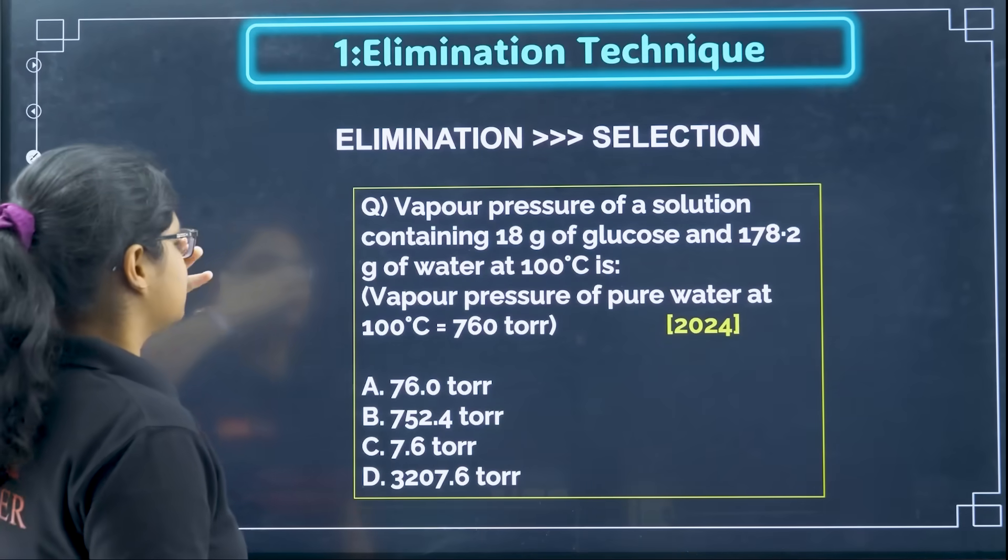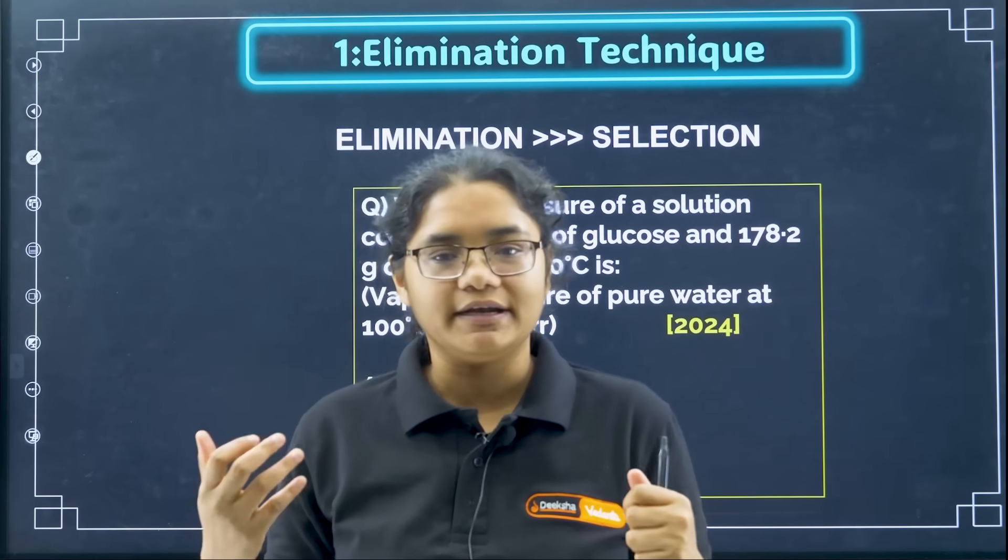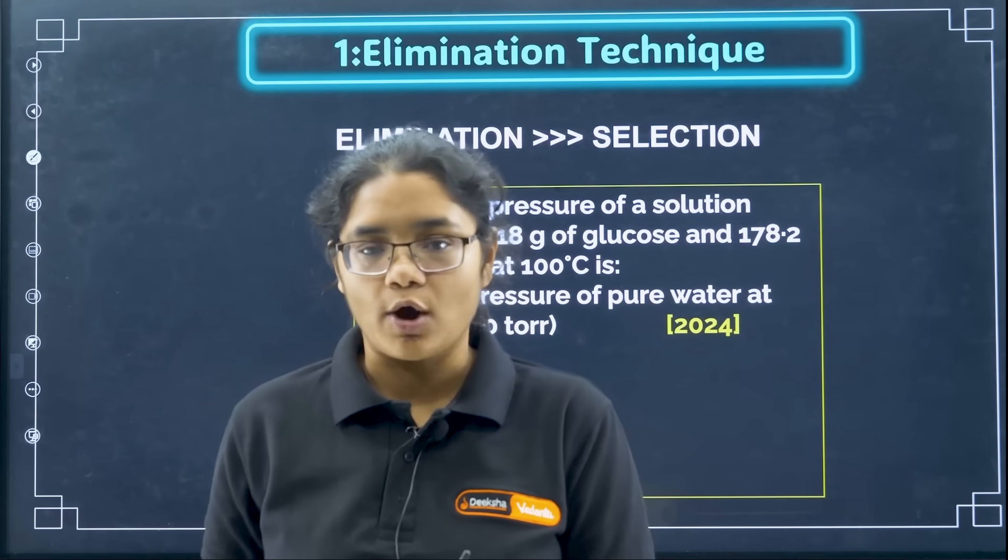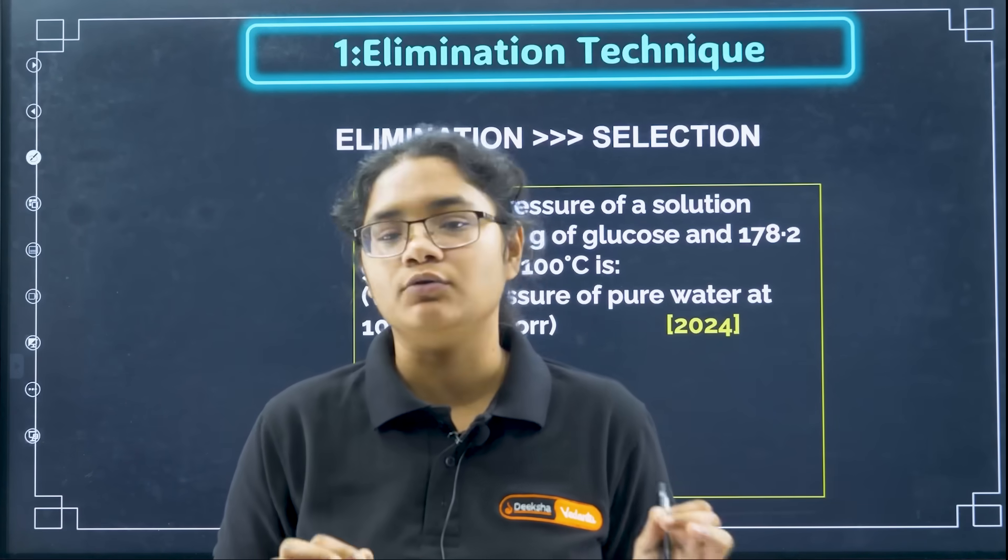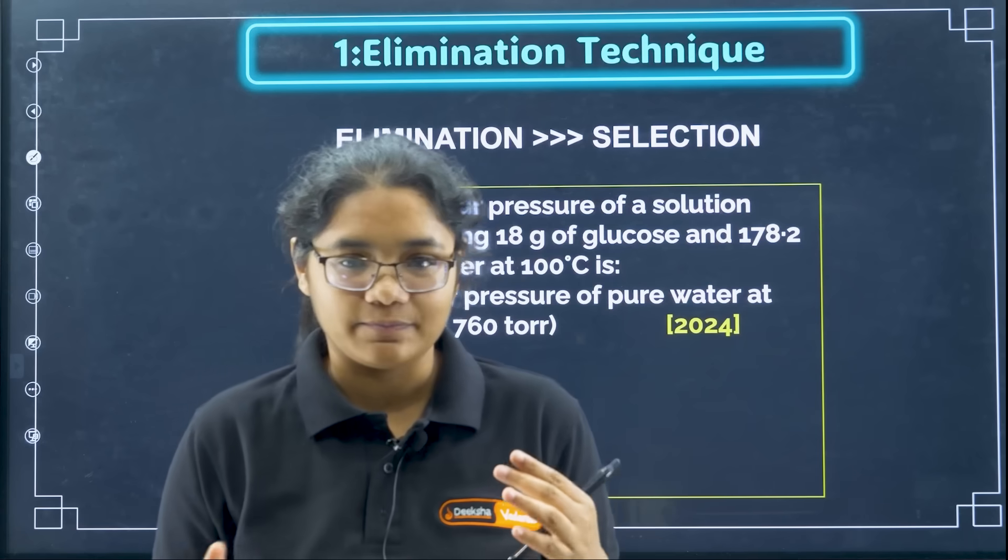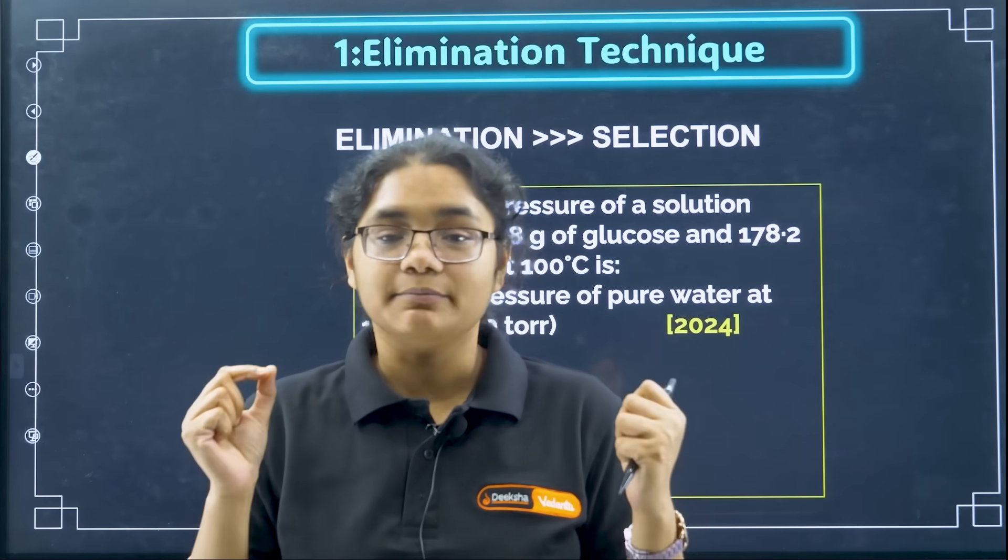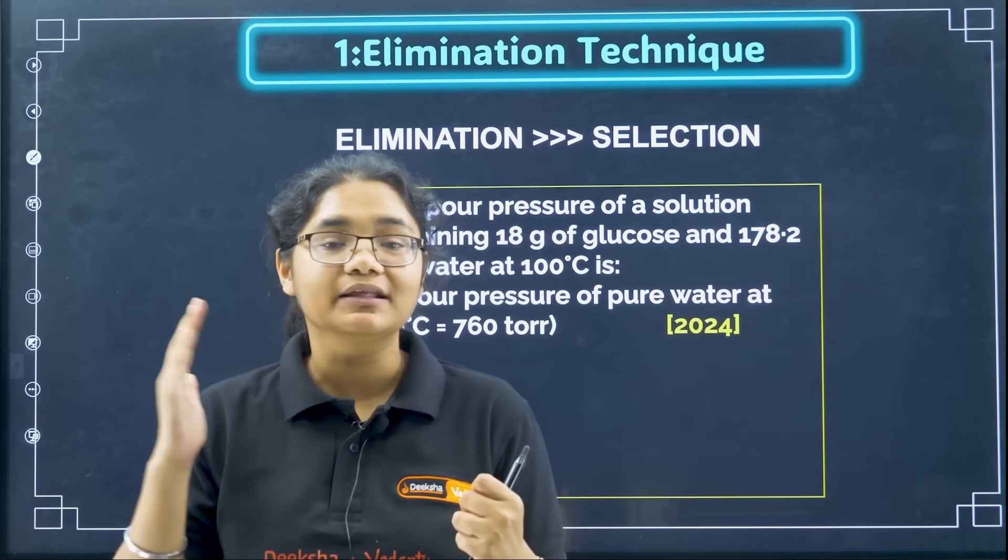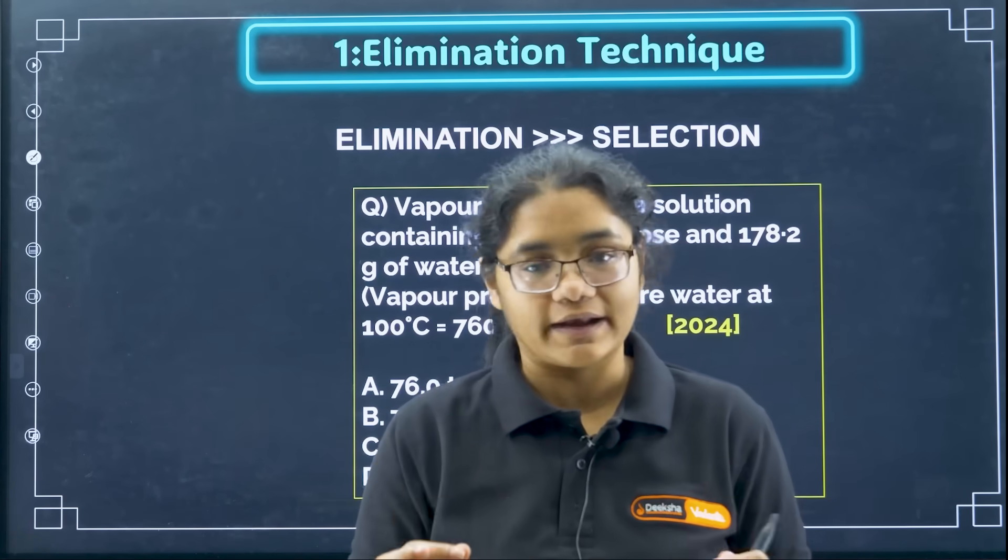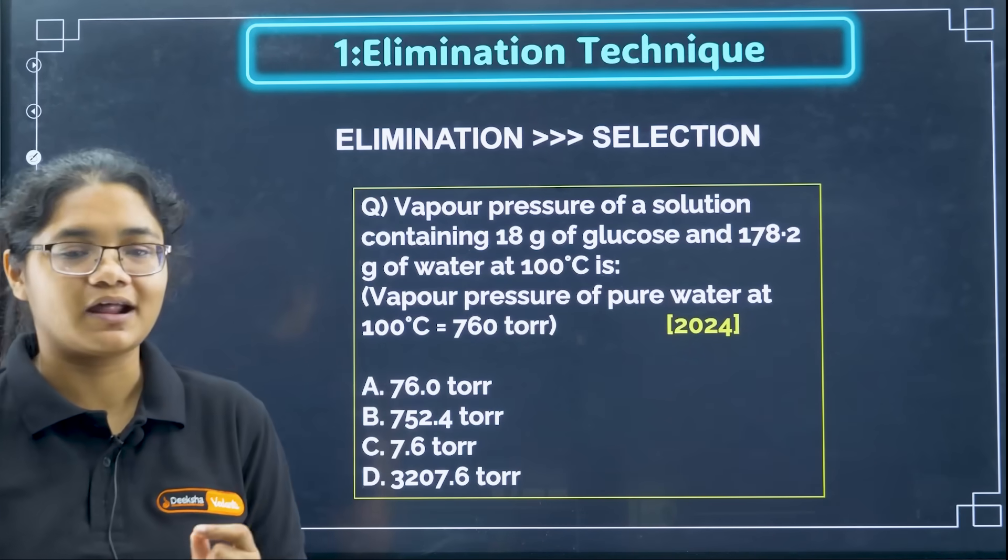Coming to the first one that is elimination technique. Whenever you see a question, if it is not a very direct question, if you have to find out you have to think sometimes, so first always focus on eliminating two options and then find the right option from the remaining two options. When you select one answer out of four the probability of getting correct becomes 25 percent. But if you are selecting one out of two it becomes 50 percent. So make sure that you are very good at eliminating the wrong options first and then whichever options are left from that you have to make the correct choice or you have to make a guess there. Definitely your probability of making the correct answer, marking the correct answer increases.